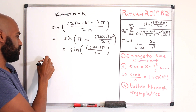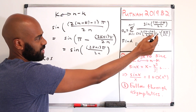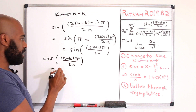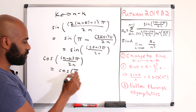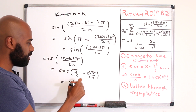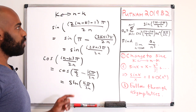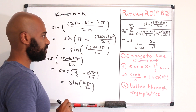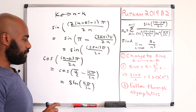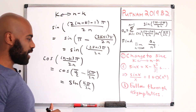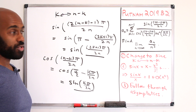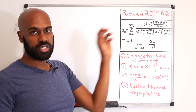Now let's look at the cosine terms. When we interchange k for n minus k, cosine of (n minus k)π over 2n becomes cosine of π/2 minus kπ/2n, which is sine of kπ/2n. So the cosine squared of kπ/2n in the denominator becomes sine squared of kπ/2n, and the argument 2k minus 1 becomes 2k plus 1. We insert these substitutions to rewrite the entire expression in terms of sines.